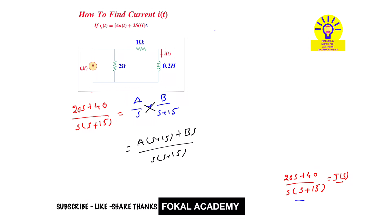And LHS is 20 S plus 40 upon S times S plus 15. So S times S plus 15 cancel, and it is 20 S plus 40. That's equal to, expand this, that is A times S plus 15 A plus B times S. So it becomes A plus B times S plus 15 A. Now compare LHS and RHS. S coefficient is A plus B that is equivalent to 20, and constant is 15 A equal to 40.